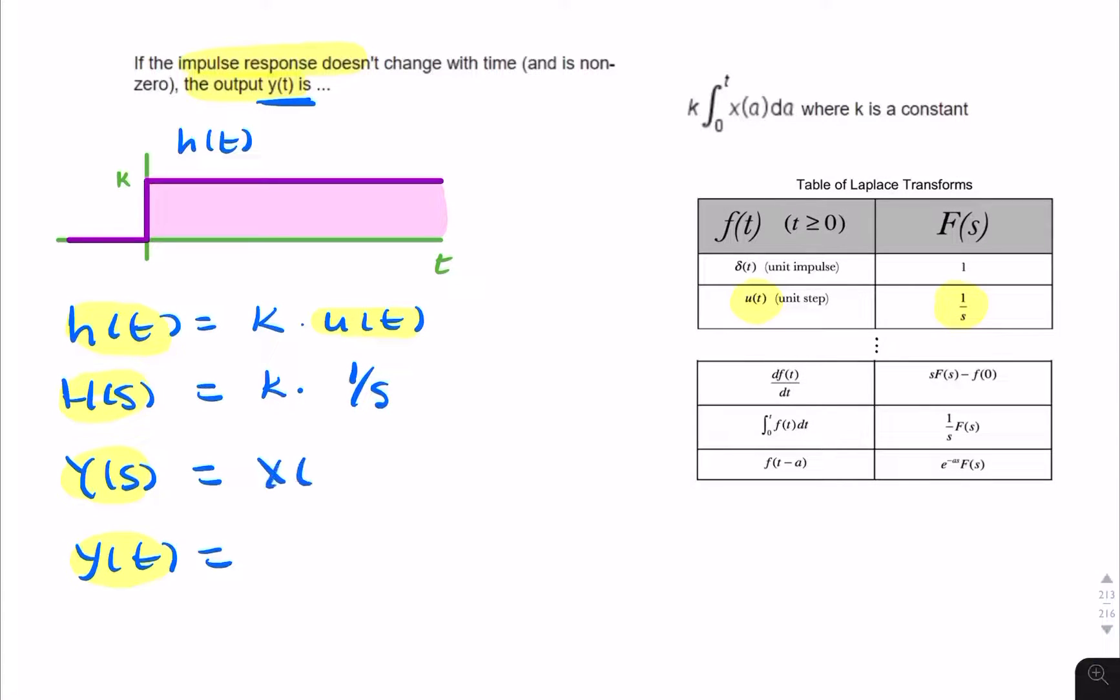Y of S is simply the input X of S multiplied by the transfer function. And the transfer function is what we just found. So we can write that as X of S times 1 over S, or times K over S.